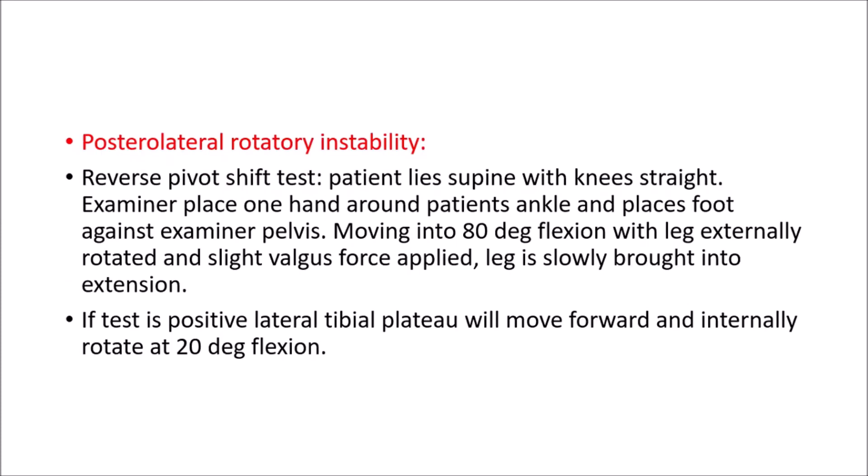Next is the posterior lateral rotatory instability. This follows a tear of the arcuate ligament complex including the PCL and results in posterior subluxation and internal rotation of the lateral tibia. The primary test used is the reverse pivot shift test. The patient lies supine with the knee straight; the examiner places one hand around the patient's ankle and places the foot against the examiner's pelvis. Beginning at 80 degrees of flexion with the leg externally rotated and a slight valgus force applied, the leg is slowly brought into extension. If positive, the lateral tibial plateau will suddenly move forward and internally rotate at about 20 degrees of flexion.